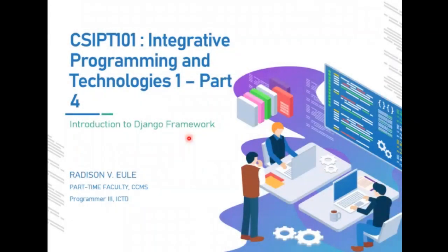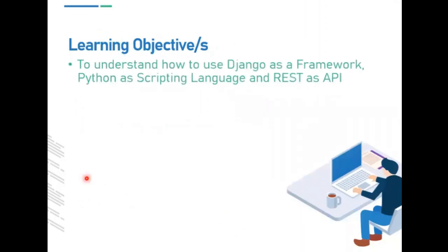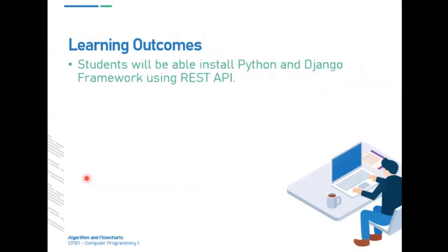Welcome to part four of our subject, Integrative Programming and Technologies 1. Let me introduce to you the Django framework. So learning objectives: using Django as the framework, Python is what we're going to use as a scripting language, and the REST will be used as API. You'll be able to install Python and the Django framework and our API.